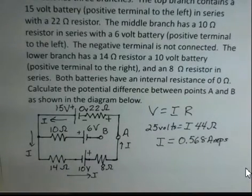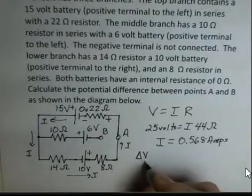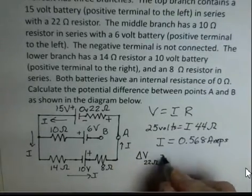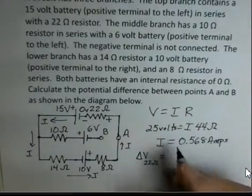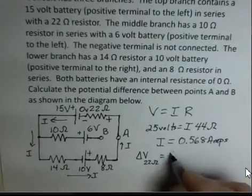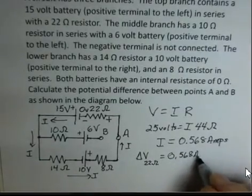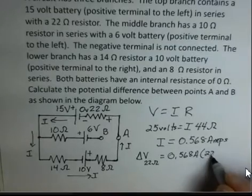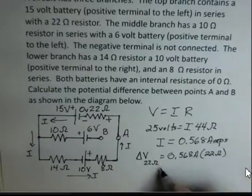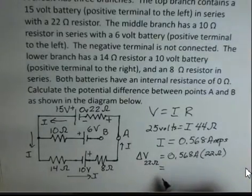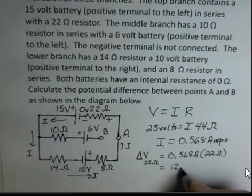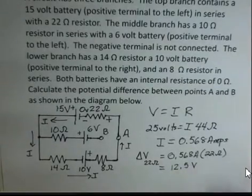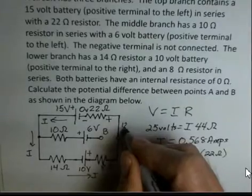What is the delta V — the potential difference — for the 22-ohm resistor? We use V = IR, Ohm's law, to calculate that. We know the current is 0.568 amps and the resistance is 22 ohms. Multiplying those together, the potential difference across the 22-ohm resistor is 12.5 volts. So point A is at 12.5 volts.